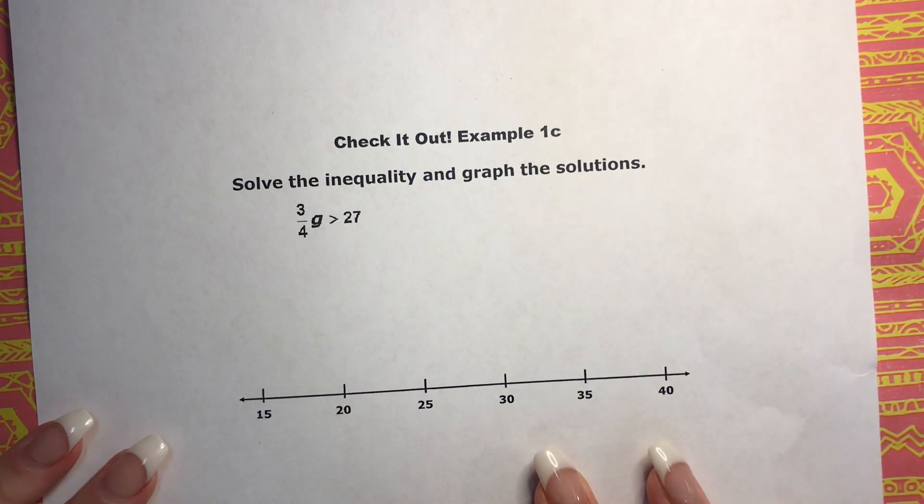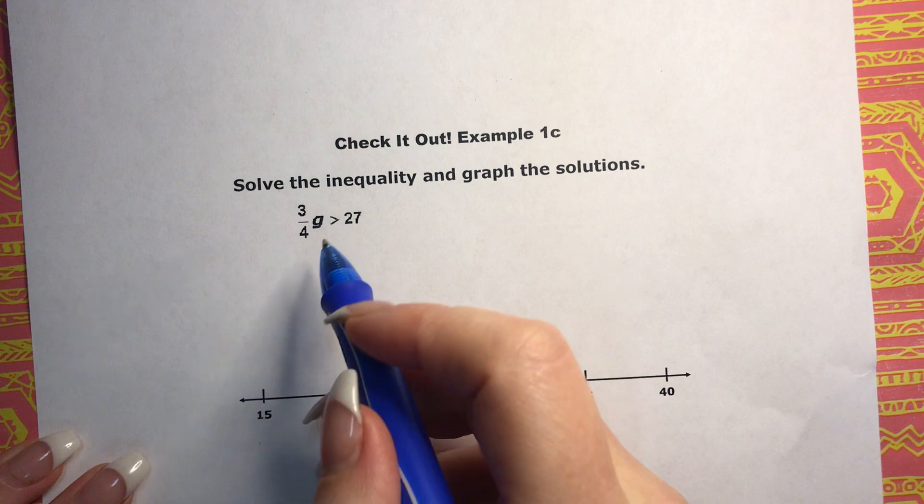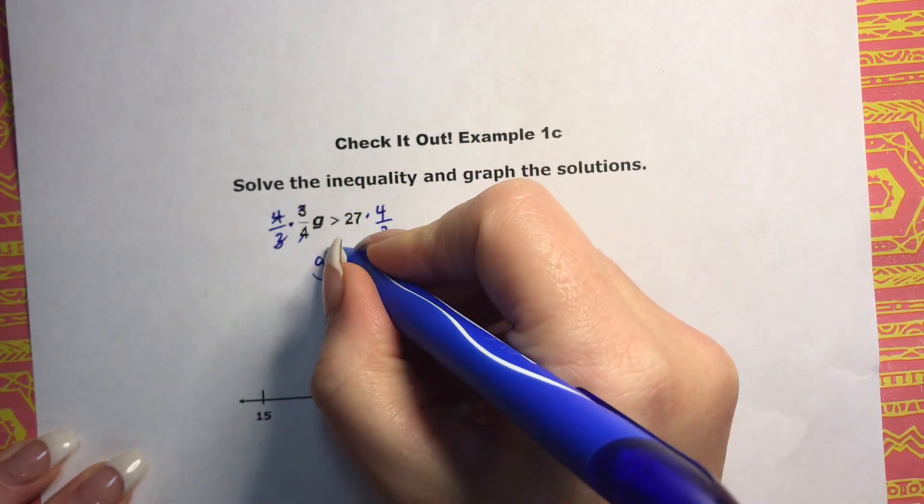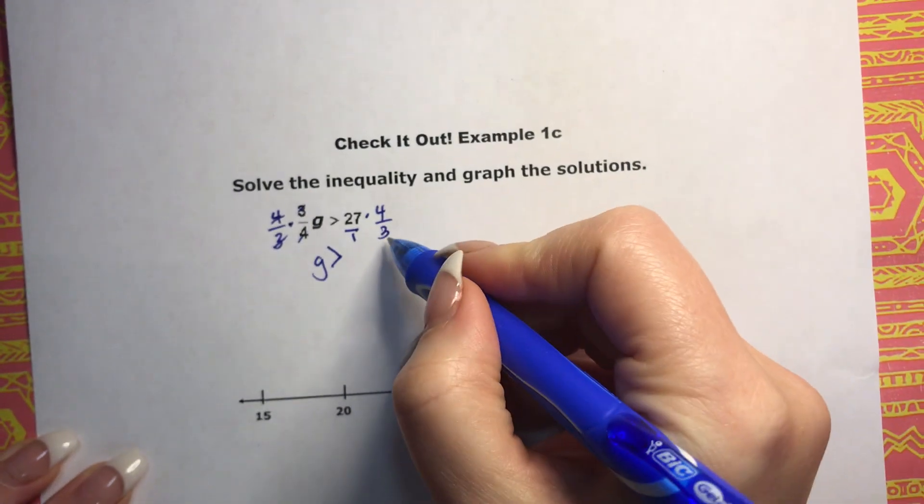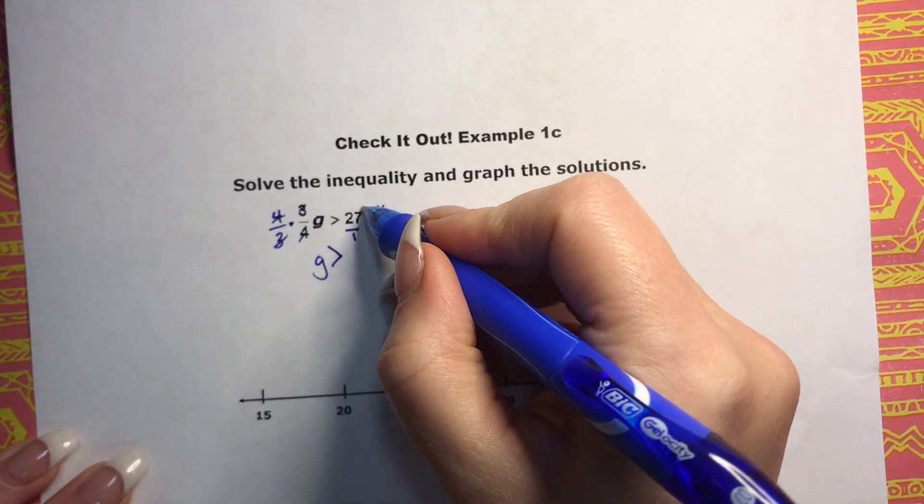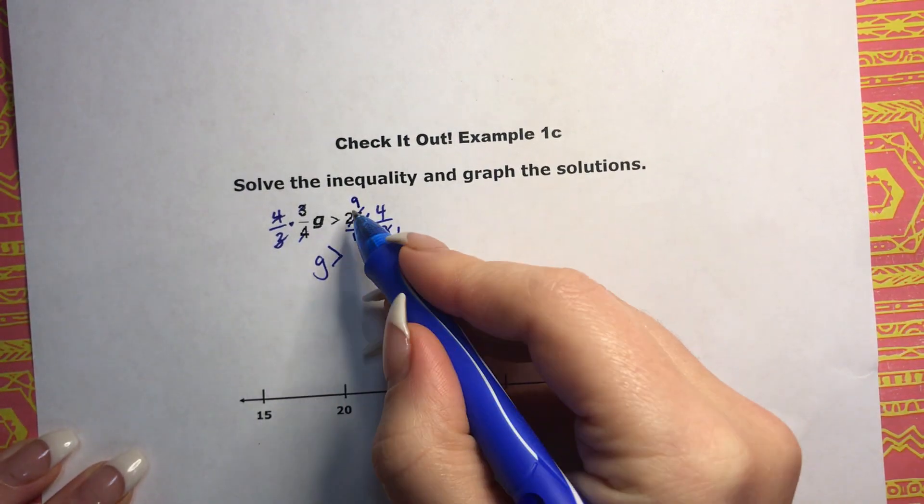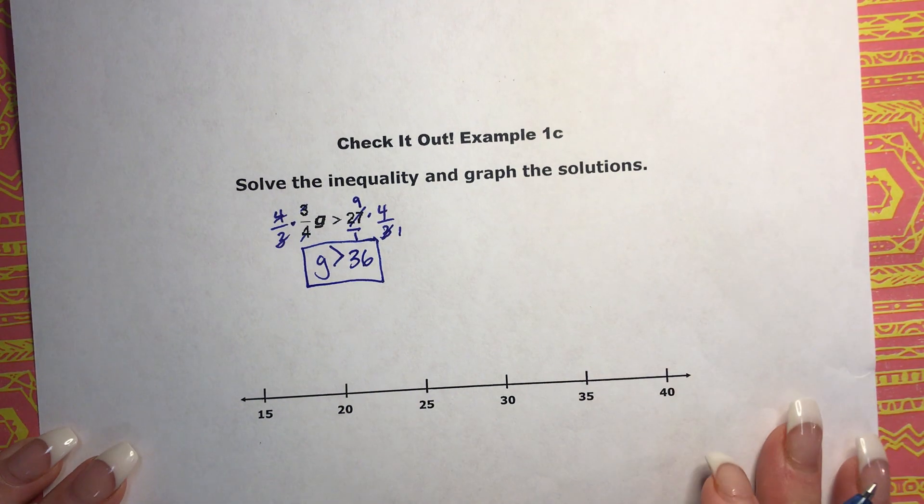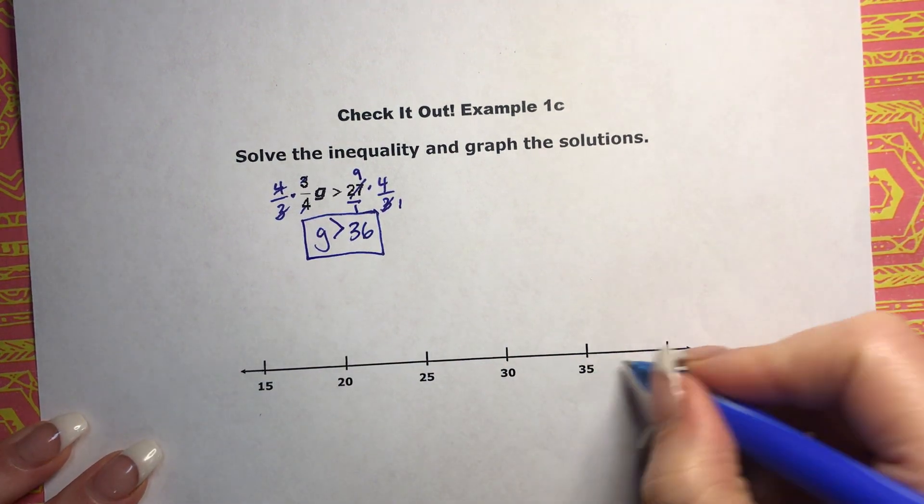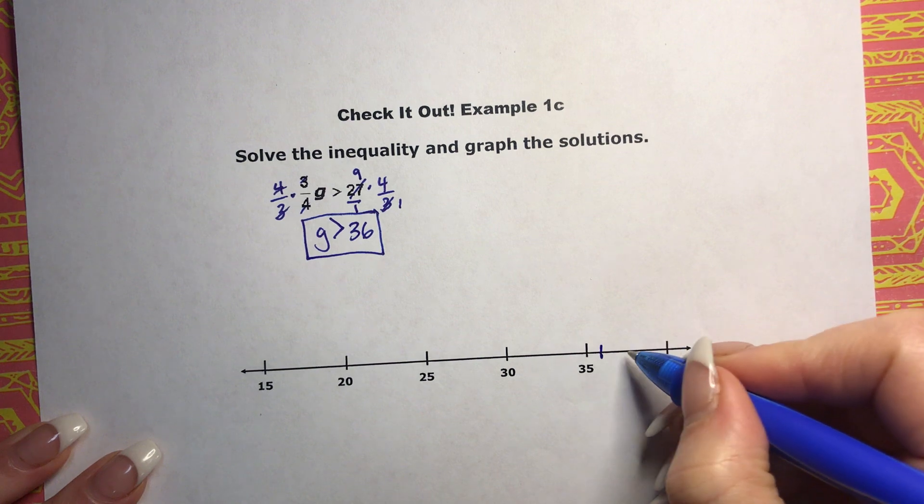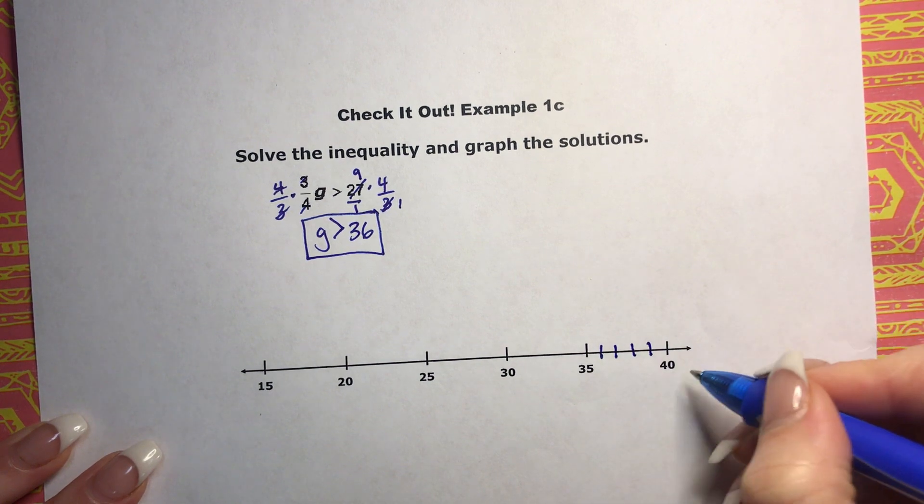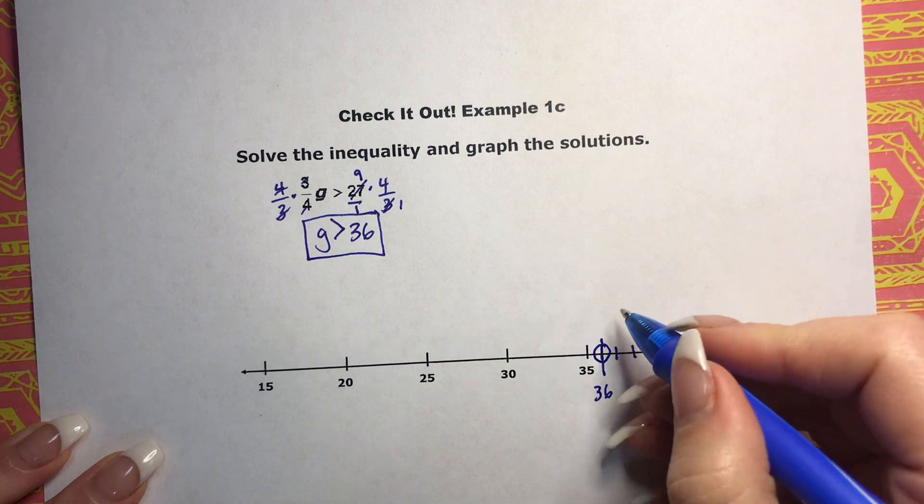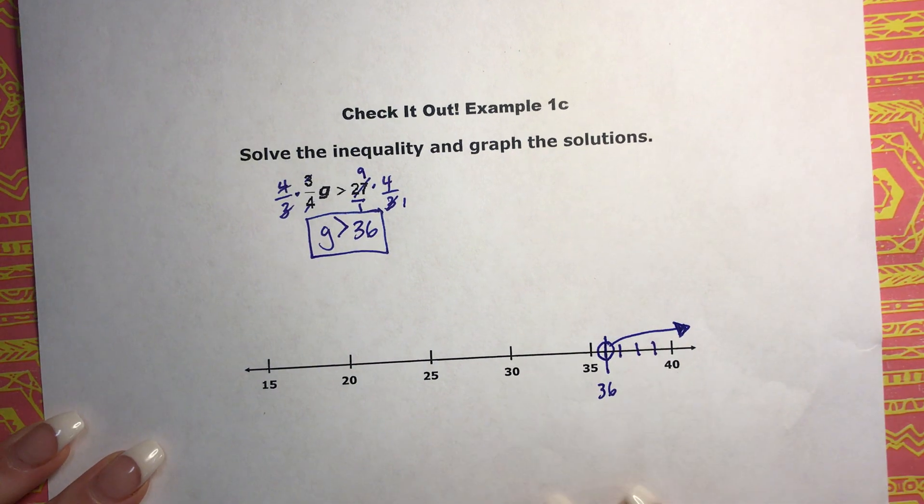Let's move on to, check it out, example 1C. So we're trying to get g by itself. It's multiplied by the fraction. We've got to go ahead and multiply by that reciprocal to both sides. Everything cancels. We are left with g is greater than, make 27 a fraction. A common factor between 27 and 3 is 3. 3 goes into 3 one time. It goes into 27 nine times. Then you multiply across. 9 times 4 is 36. Over 1 is the same thing as 36. Okay. Now we just need to graph it. So I got to get to 36. So between 35 and 40. So let's go 36, 37, 38, 39, 40. So this would be 36. And it's going to be an open circle. And g is everything above it. So that is how you would graph it.